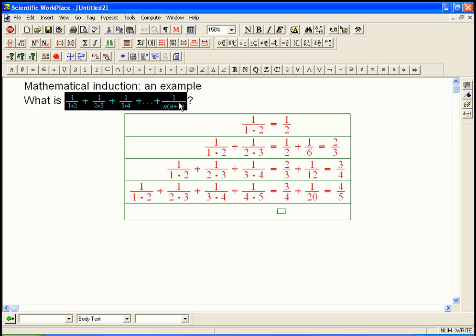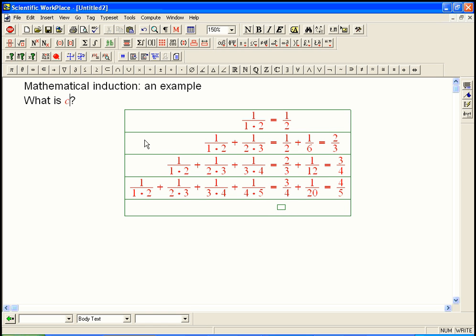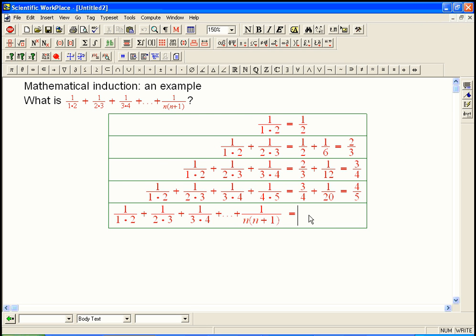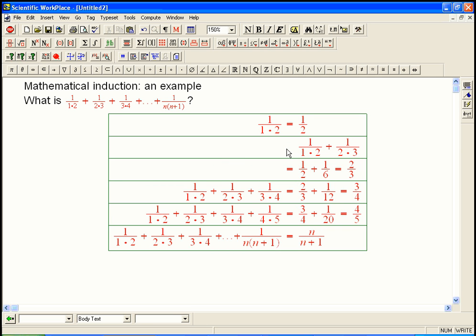So our conjecture would be that that's just n over n plus 1. That's certainly a nice shortcut. So let's see why that might be true. We're supposed to get a denominator of just n plus 1, so like here, this number showed up as the denominator there. Well maybe we could redo that calculation.